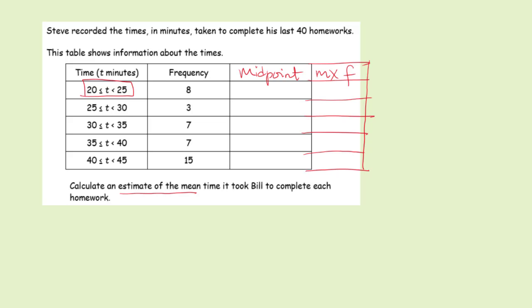This mistake is very common. What students will do is work out the midpoint incorrectly. They'll say for 20 to 25 there are five numbers, so half of five is 2.5, and you add 2.5 to 20 which gives us 22.5, so the midpoint is 22.5. But students will make the mistake of dividing 6 by 2 and adding 3 to 20, saying the midpoint is 23. Don't make that mistake.